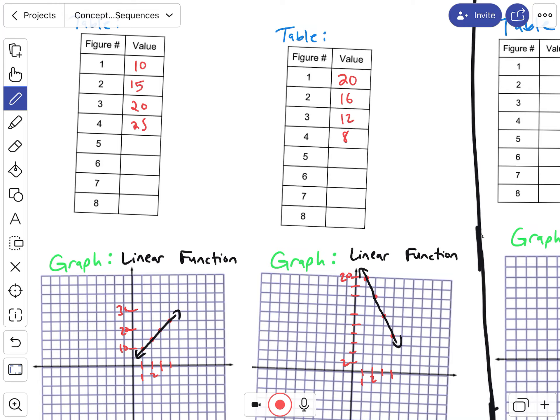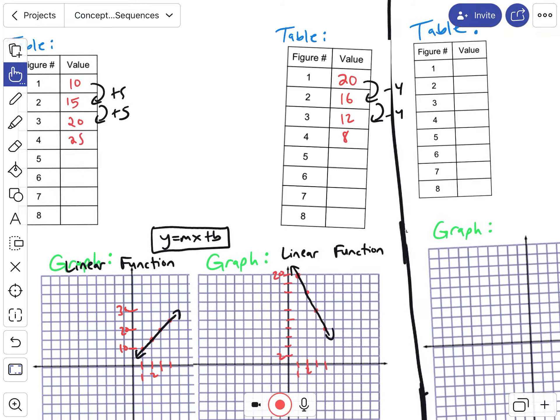You could basically have a table where you're subtracting a certain amount, which is the pattern, or adding a certain amount. And from a graph, you could actually have a linear function, which is y equals mx plus b, where you could basically graph the y-intercept and the slope. But we're not going to talk about that yet.